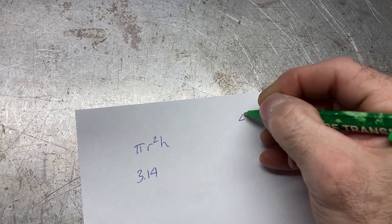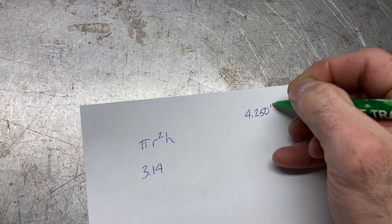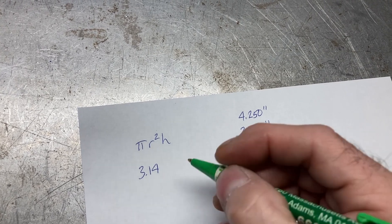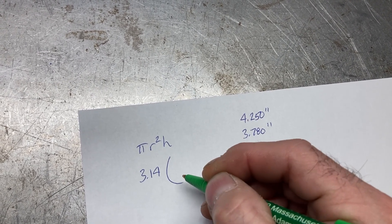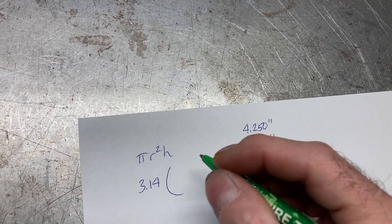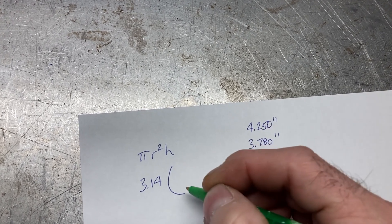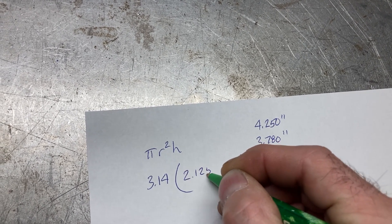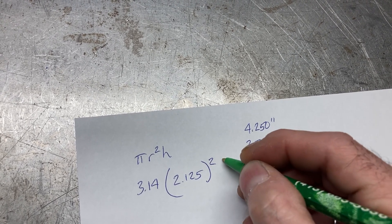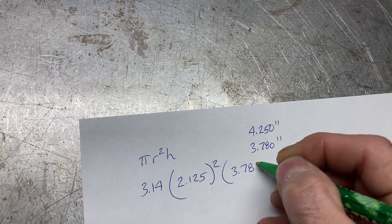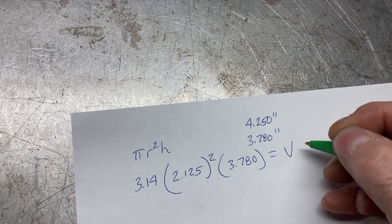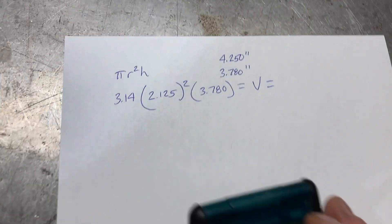If we use our formula, we can say that pi times the radius, which would be 2.125 (obviously half the diameter), squared, times 3.78. That will give us the volume of one cylinder.